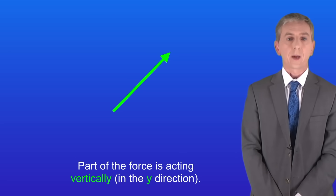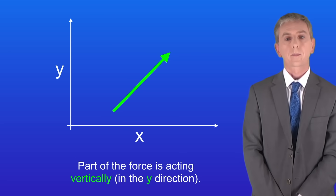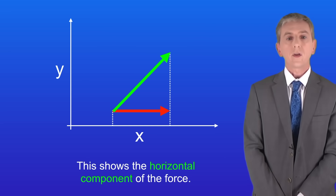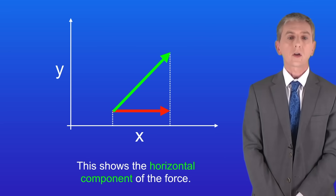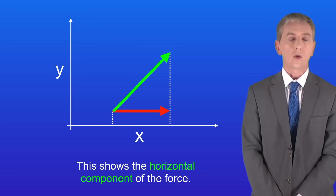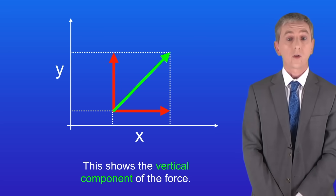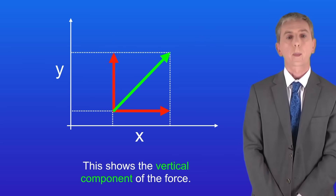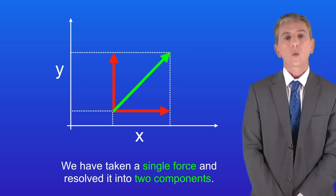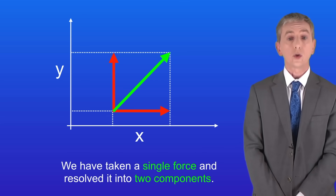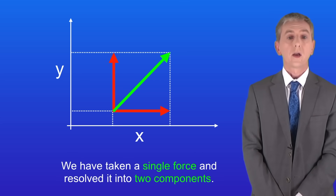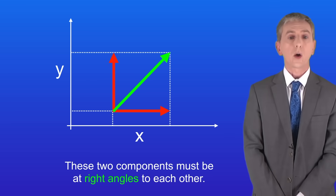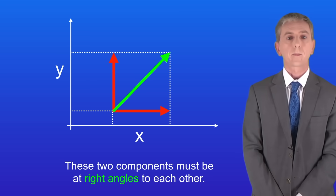I'm going to show that by putting x and y axes on the diagram. So this shows the horizontal component of the force, and this shows the vertical component of the force. So we've taken a single force and resolved it into two components, and these two components must be at right angles to each other.